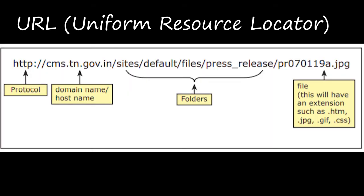URL stands for Uniform Resource Locator. All search engines have a URL, and to watch a video you get a link — for example, containing http, youtube.com, and some letters and numbers. URL is the address of a document on the internet. A URL is made up of four parts: protocol, host name, folder name, and file name. Each part has its own specific function.